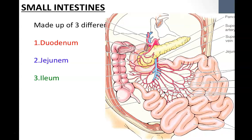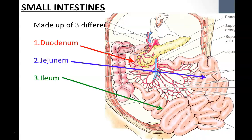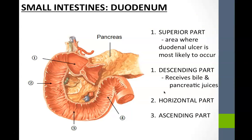The three parts of the small intestines are the duodenum, jejunum, and ileum. The duodenum has four parts. The first part, the superior part, is where duodenal ulcers are most likely to occur because of its proximity to the stomach. If the pyloric sphincter can't fully contract, gastric juices can leak into the duodenum and cause a duodenal ulcer.